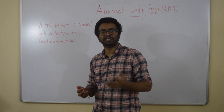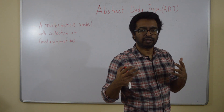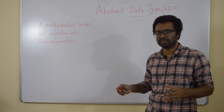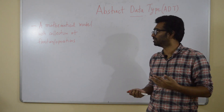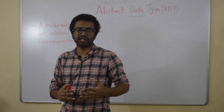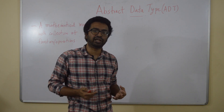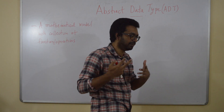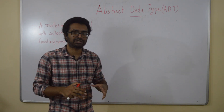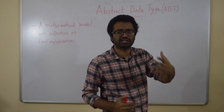You have seen primitive data types like integers, float, etc. And integers, for example — let's take integers. The data type integer supports a collection of operations like addition, multiplication, or powering, etc.